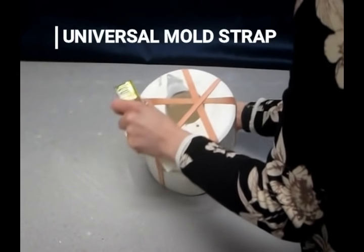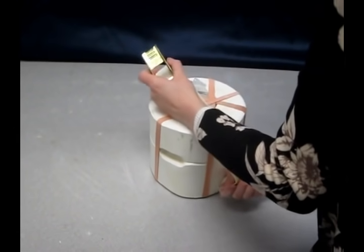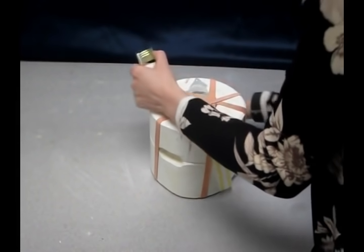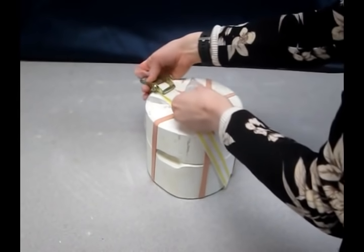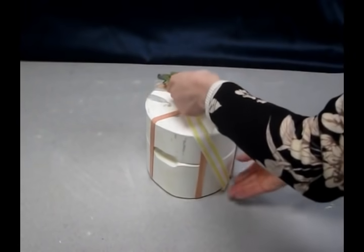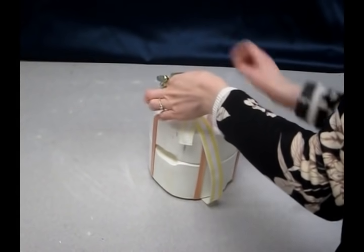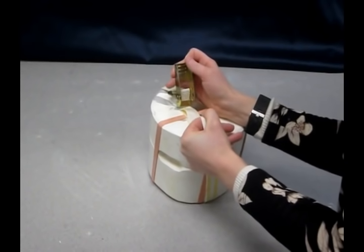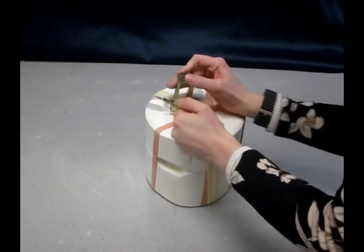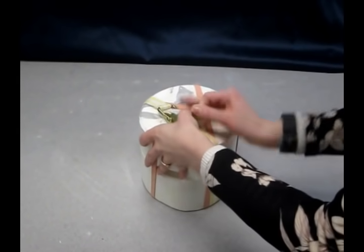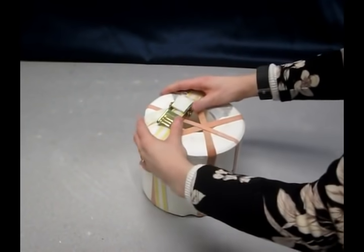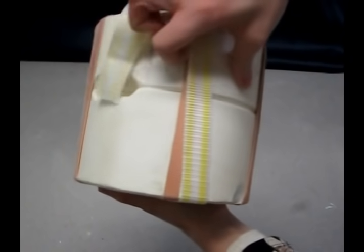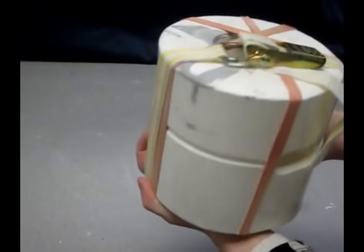You can also use one of these universal mold straps to hold the clay slip cast molds together. So I'm going to pull tightly at that, and then flip. There we go. So that is now very tightly holding the two halves of my mold together.